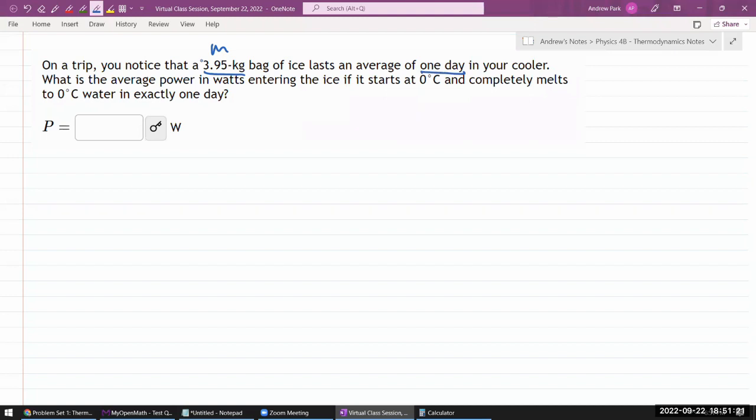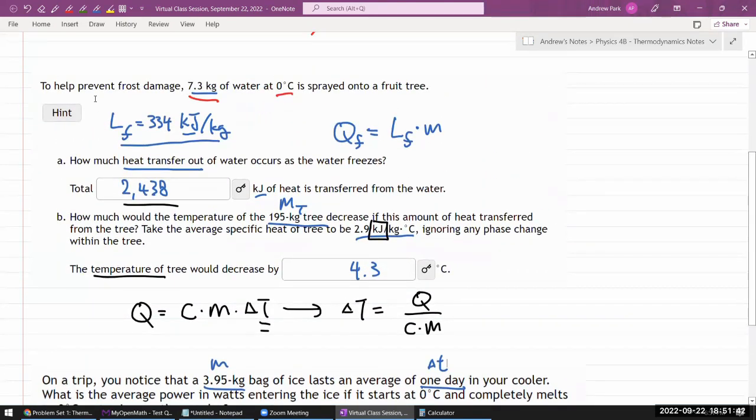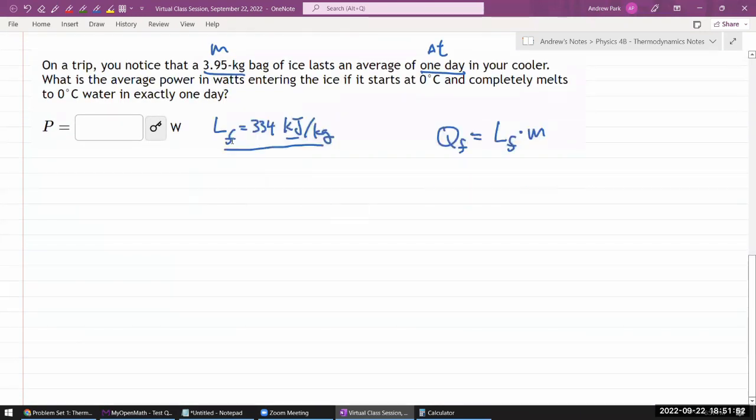What is the average power? This time of day will be important. So this is delta time. Average power in watts entering the ice. If we start at that, it completely melts. I don't have any change of temperature. All I have to worry about is latent heat of fusion. I think I looked up the number earlier, and I have it here. Let me just copy and paste that, so that I don't have to look it up again.